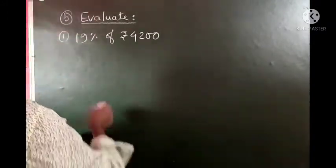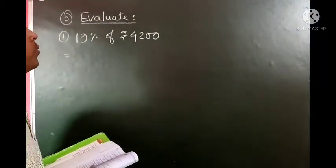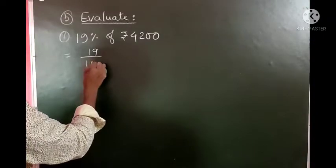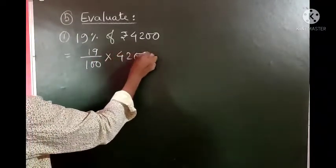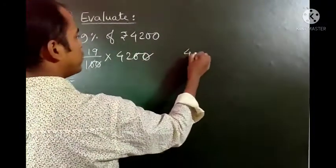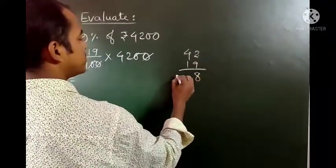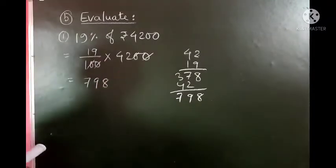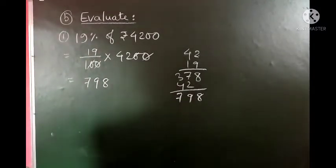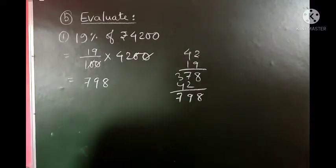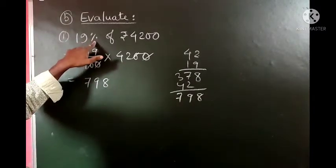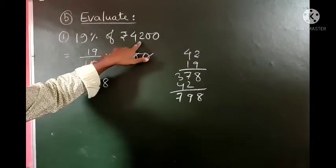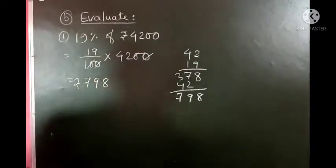Question number 5: evaluate. 19 percent of rupees 4200. So 19 percent means 19 by 100. Of means multiply. So 19 by 100 into 4200. So 19 into 42 equals 798. So the answer is rupees 798.